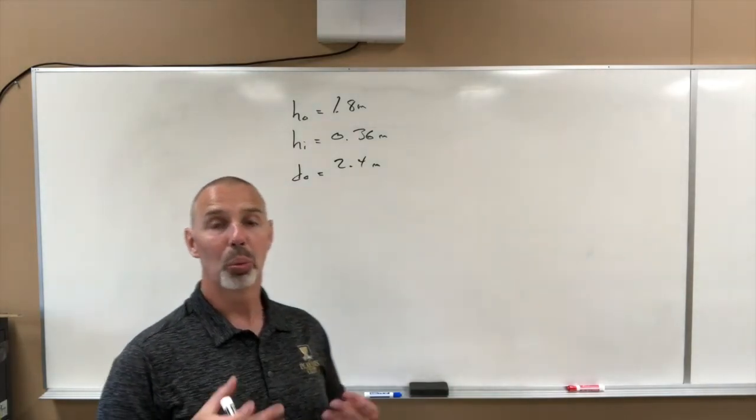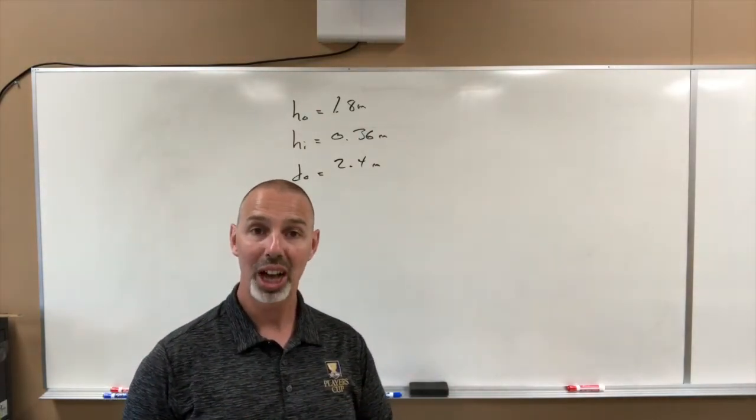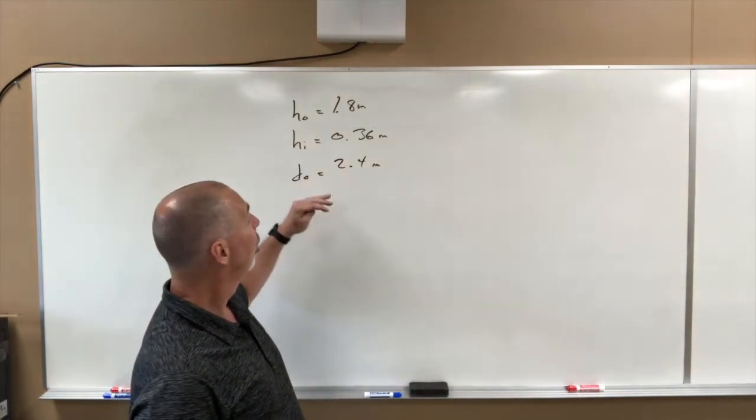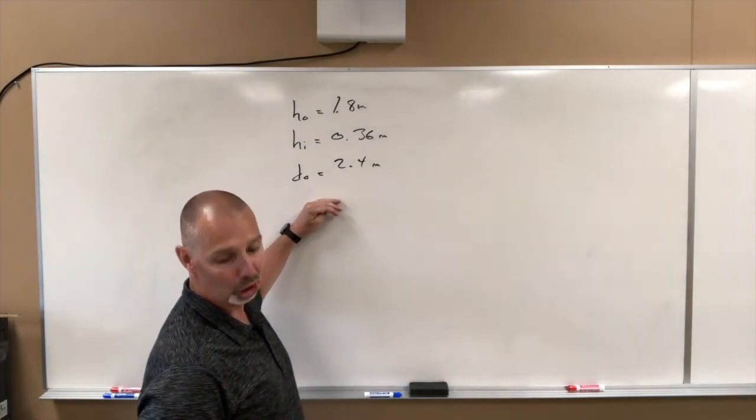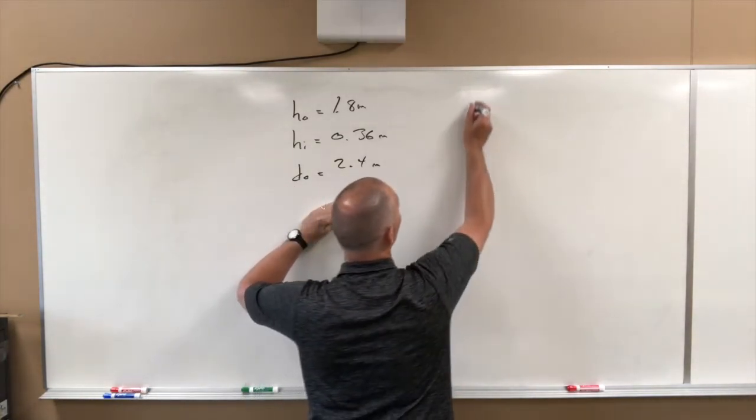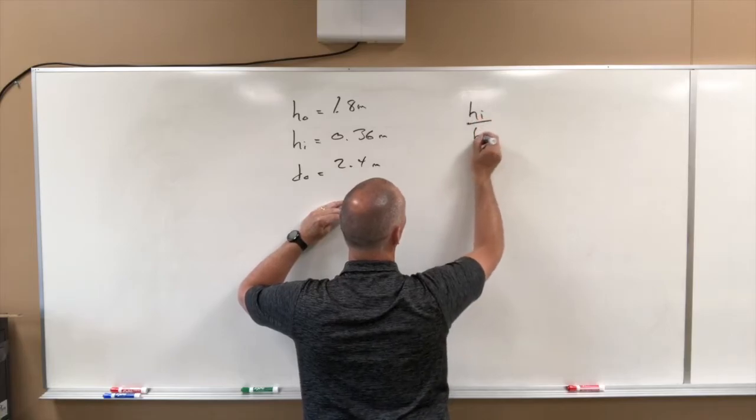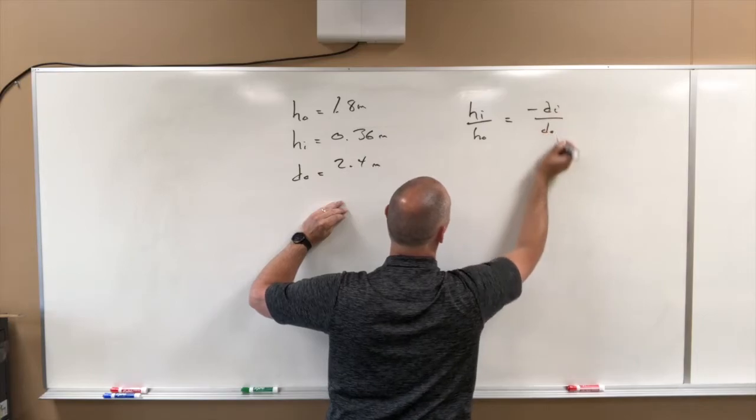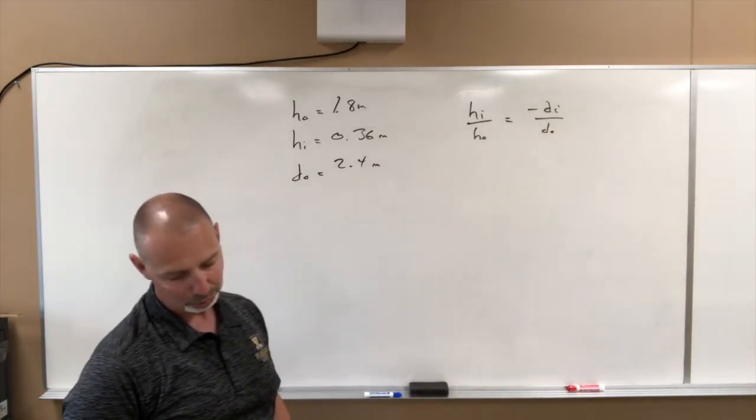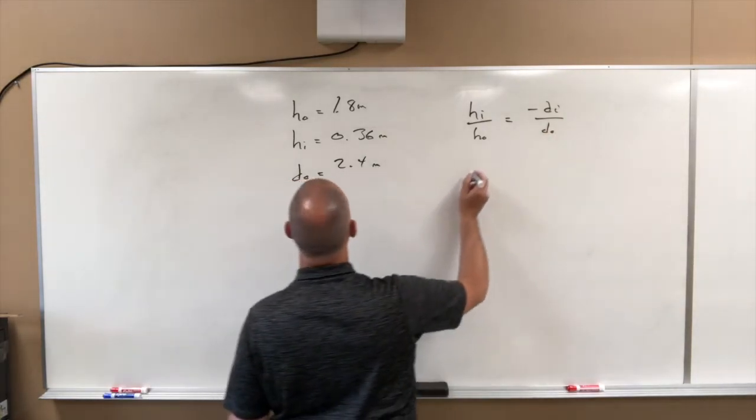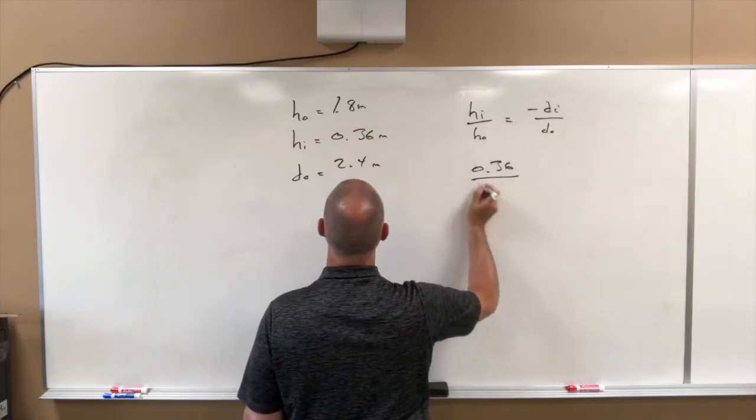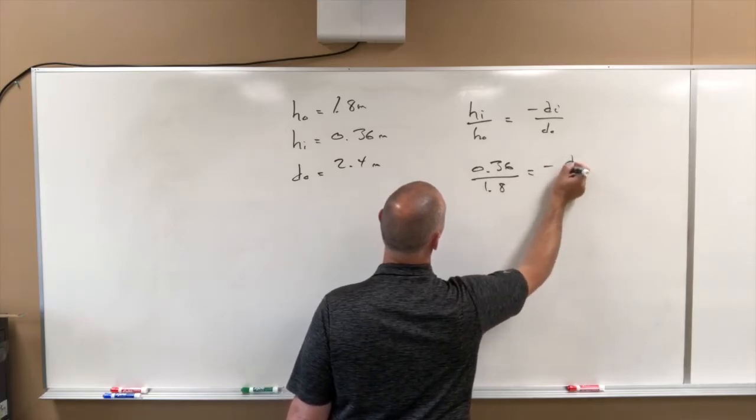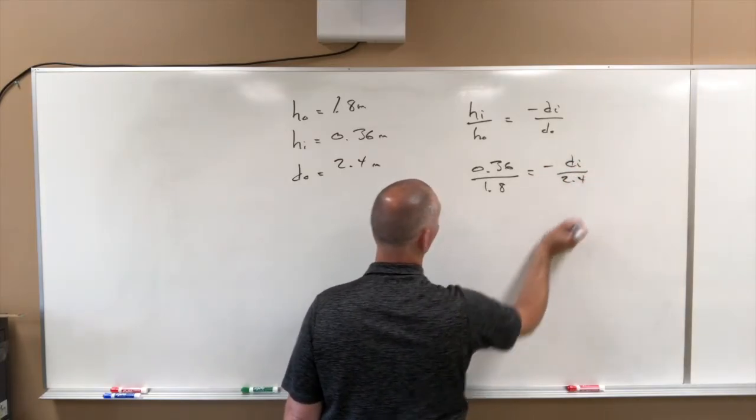Our mirror equation, 1 over F equals 1 over DI plus 1 over DO. To solve for F, we need DO, but we can find DO using our magnification formula. So again, the magnification formula is HI over HO equals negative DI over DO. Let's plug our numbers into there. We have 0.36 over 1.8 equals negative DI over 2.4.